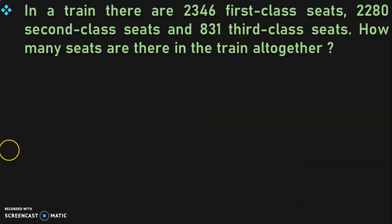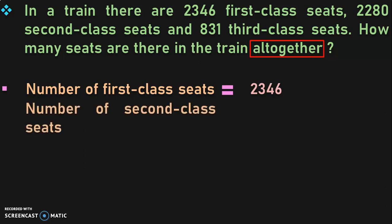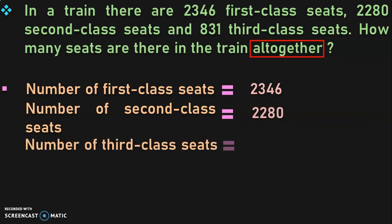Let us do the next sum. In a train, there are 2,346 first-class seats, 2,280 second-class seats, and 831 third-class seats. How many seats are there in the train altogether? The keyword is 'altogether', which indicates we have to do an addition operation. Write down the statements: number of first-class seats is 2,346; number of second-class seats is 2,280; number of third-class seats is 831. Notice that 831 is a three-digit number, so write it in the correct place. It is always good practice to write down the place values first so that you write the numbers in their correct places.